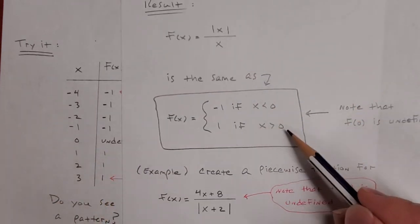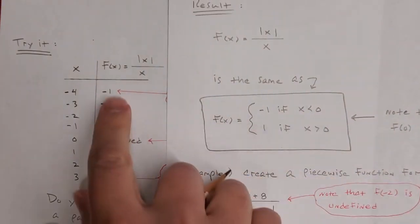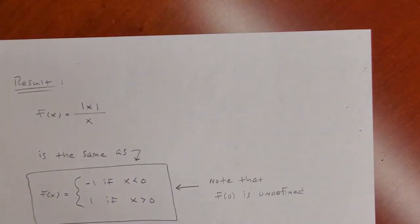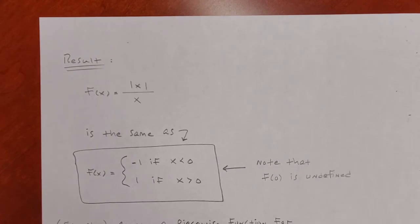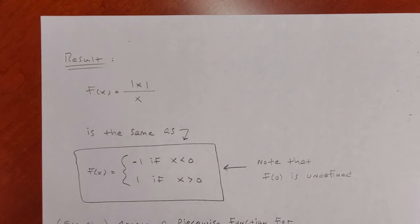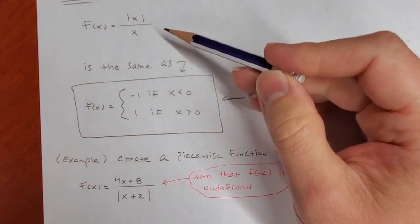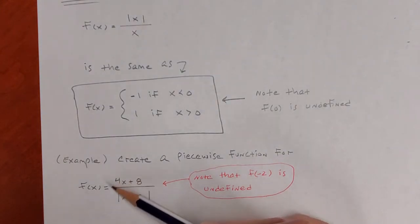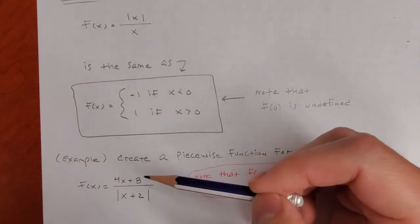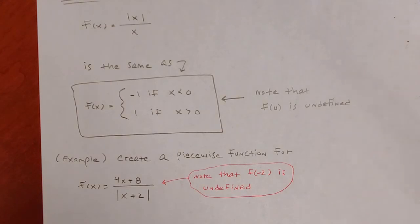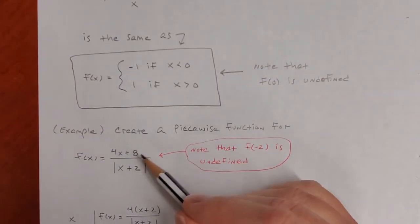I can't include zero, so I'm not using 'less than or equal to' or 'greater than or equal to' on either piece — if I did, it wouldn't work like the original function. There you go — those two behave exactly the same way. Now let's try another one inspired by this. This one is similar — it's something over an absolute value — but it's obviously different.